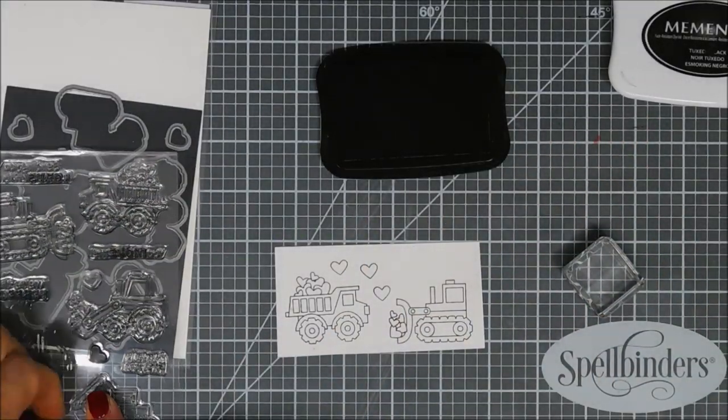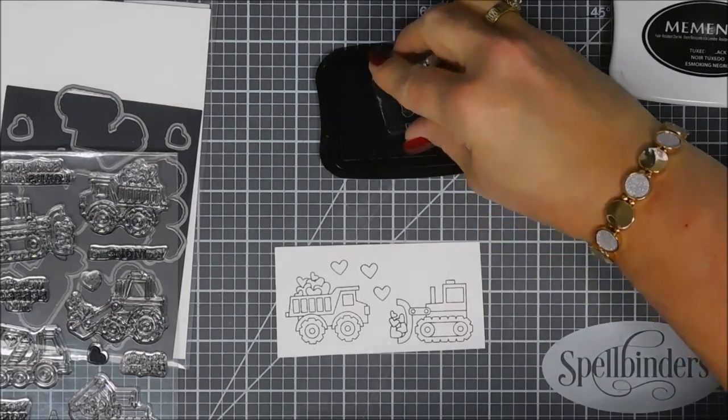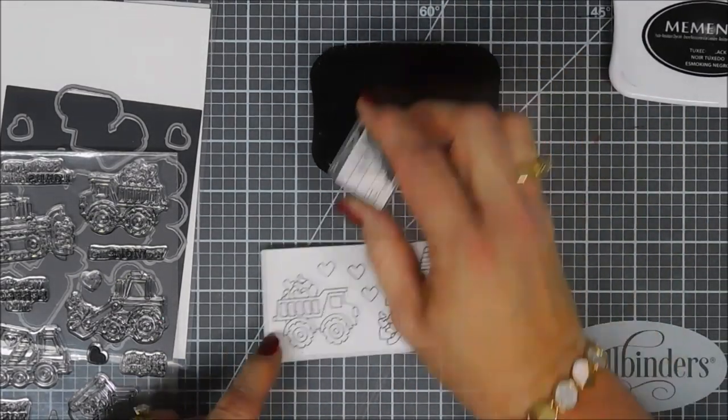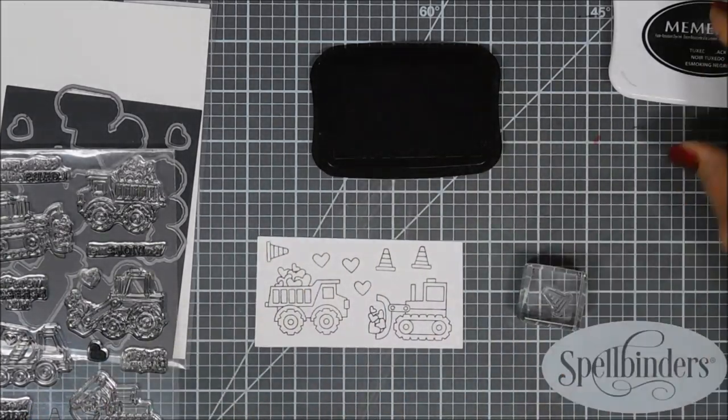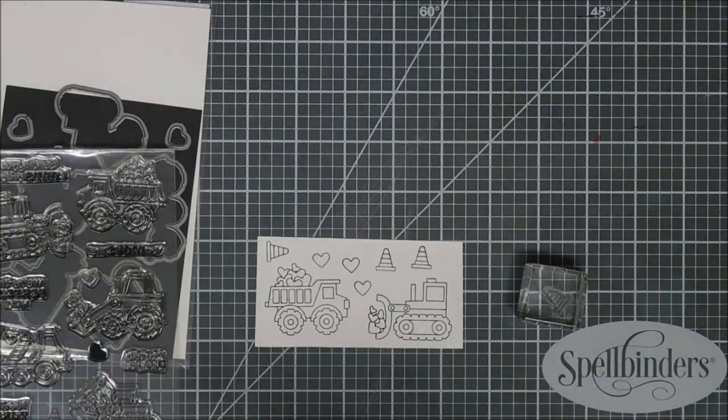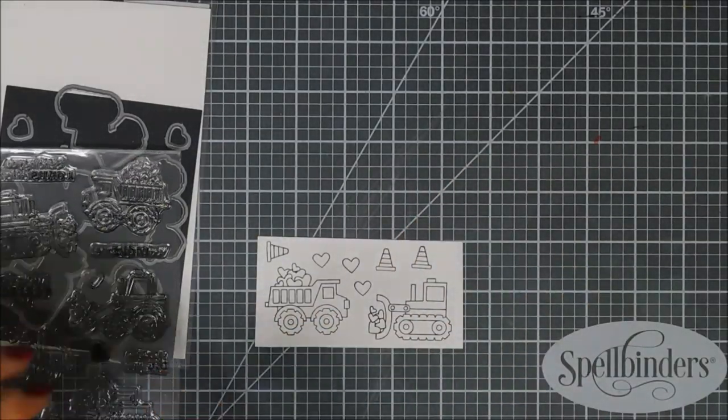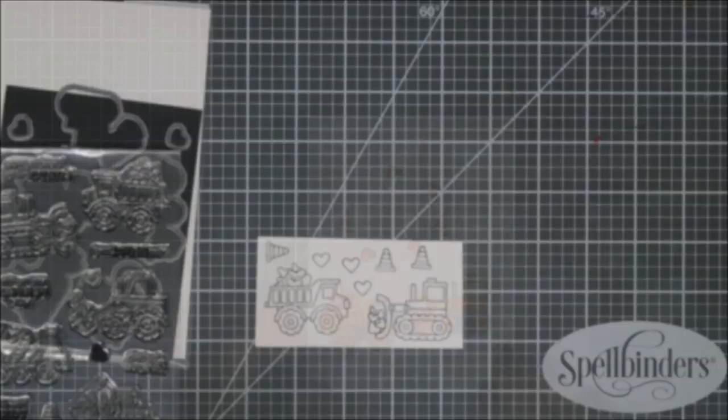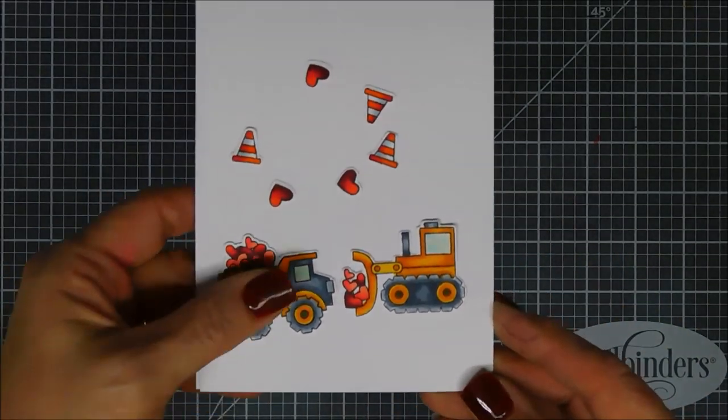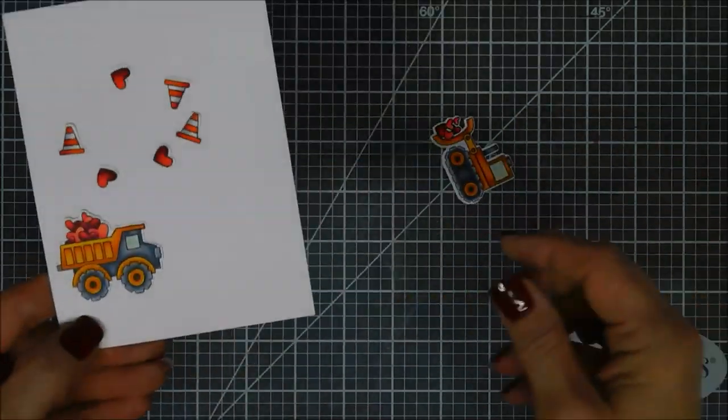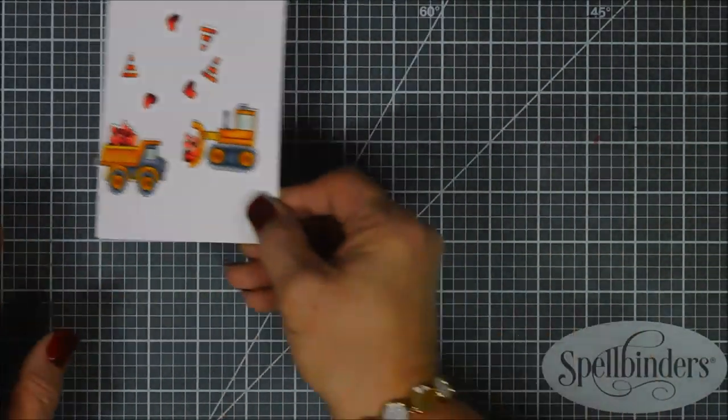But I skipped the coloring guys. I just chose some yellows and truck tones, and then I used the coordinating dies to cut out my images. I skipped the coloring because I wanted to speed the video along to save me a little bit of time because all week long we're going to be doing Newton's Nook Designs reveals.